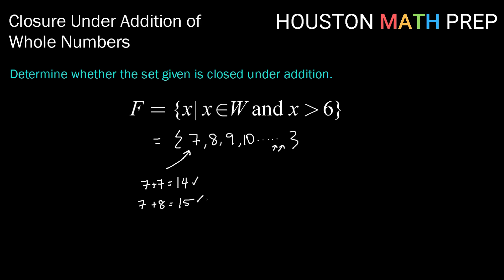If I continued in this pattern, if the smallest one, 7 plus 7, is in there, and every sum after that is bigger, then every possible sum is going to be found in this set. So this one is closed.